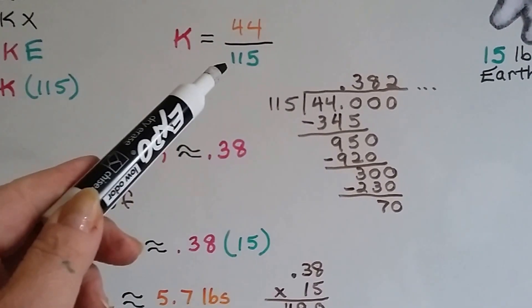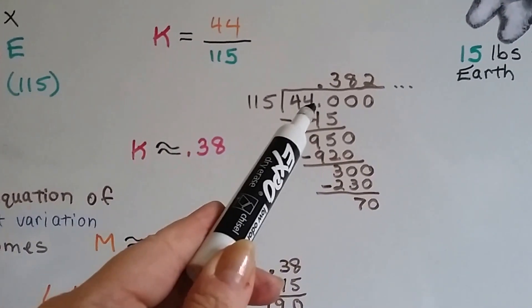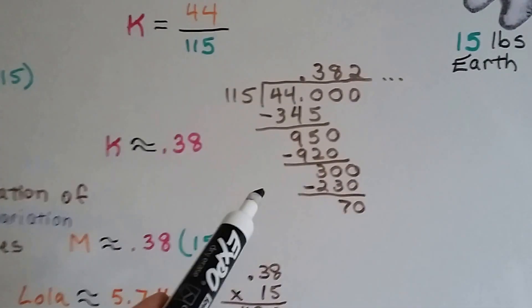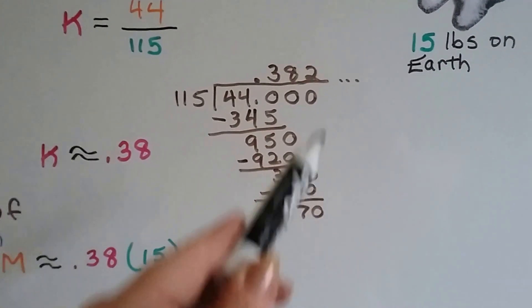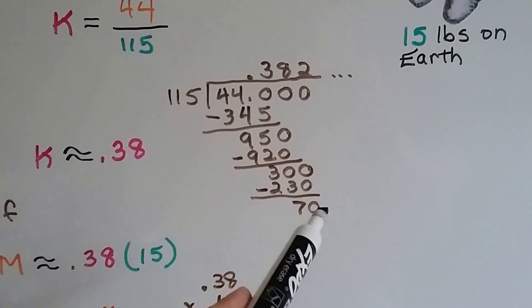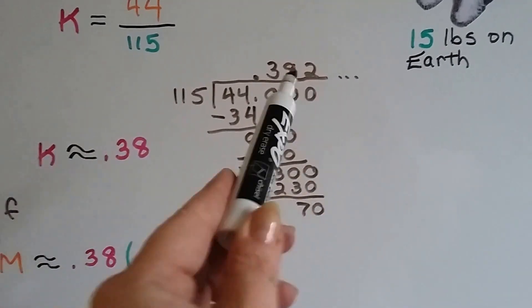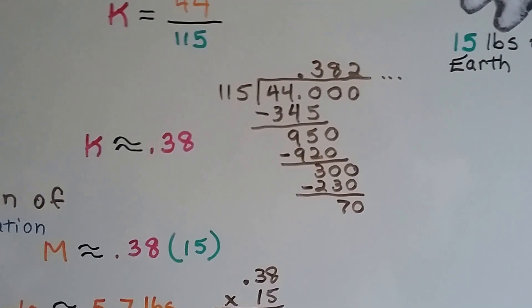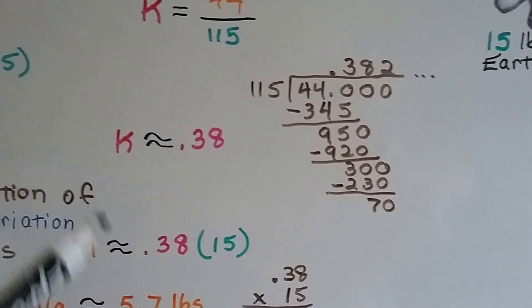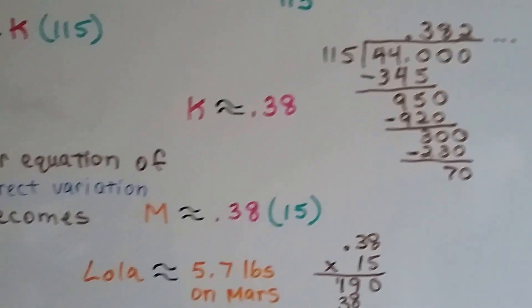We're going to divide 44 by 115. We're going to have to add a decimal point and some zeros. I came up with .382, but it kept going. I could drop down another zero and see how many times 115 goes into 700. I could keep going, but I'm just going to round it to a couple place values. So the k is approximately .38.